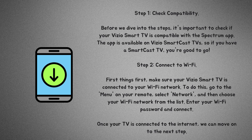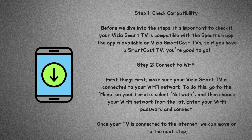Step 1: Check compatibility. Before we dive into the steps, it's important to check if your Vizio Smart TV is compatible with the Spectrum app. The app is available on Vizio Smartcast TVs, so if you have a Smartcast TV, you're good to go.